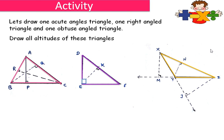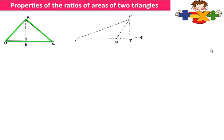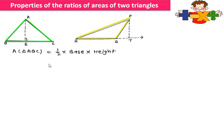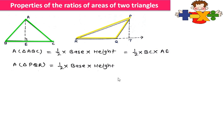When we take base XZ the height will be YN. Now here we have two triangles: triangle ABC and triangle PQR. For triangle ABC the base is BC and the height is AE. For triangle PQR the base is QR and the height is PT. So the area of triangle ABC is equal to 1/2 into base into height, so we write 1/2 into BC into AE.